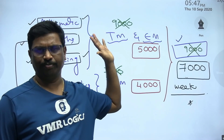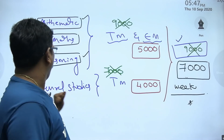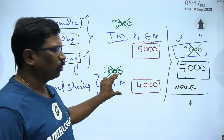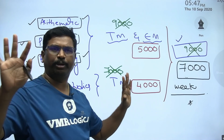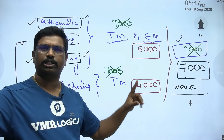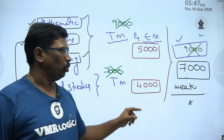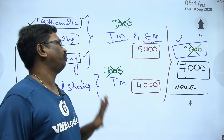The course fee for Arithmetic, Reasoning, and Pure Maths is ₹5,000. For General Studies only, the course fee is ₹4,000.